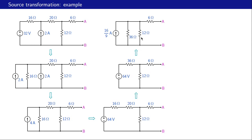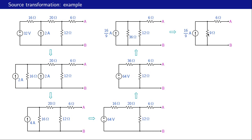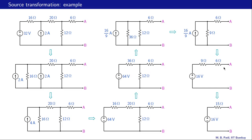The thirty-six ohms is in parallel with twelve ohms, giving nine ohms. Now we convert this Norton form into its Thevenin equivalent: v-th equals i-n times r-n, which is sixteen-ninths times nine giving sixteen volts, and r-th equals nine ohms. Adding the remaining six-ohm resistor in series gives fifteen ohms total. So our final Thevenin equivalent circuit as seen from a-b has v-th equal to sixteen volts and r-th equal to fifteen ohms.